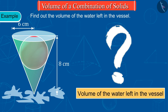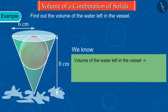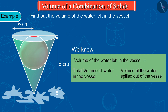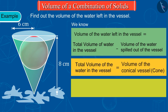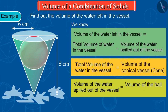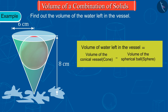Find out the volume of the water left in the vessel. We know that the volume of the water left in the vessel is equal to the difference of the total volume of water in the vessel and the volume of the water spilled out. The total volume of water in the vessel equals the volume of the conical vessel, and the volume of water spilled out equals the volume of the ball — the sphere — because the ball displaces as much water as the space it occupies. So the volume of water left equals the difference of the volume of the cone and that of the spherical ball.